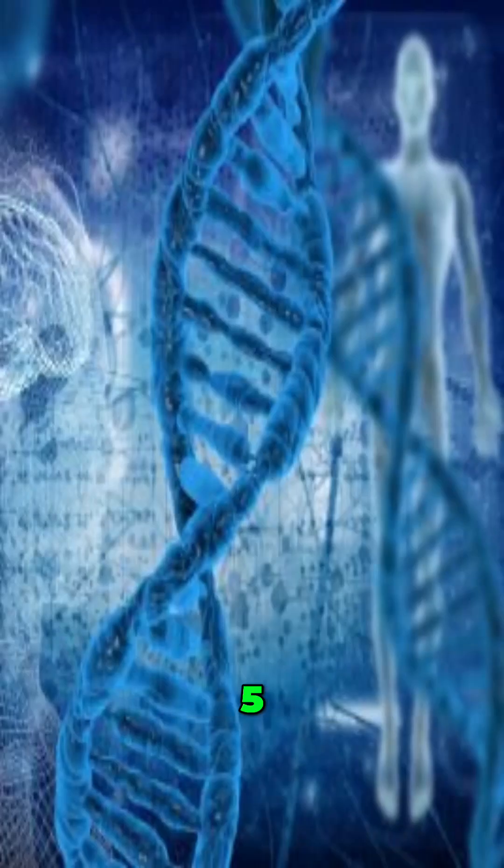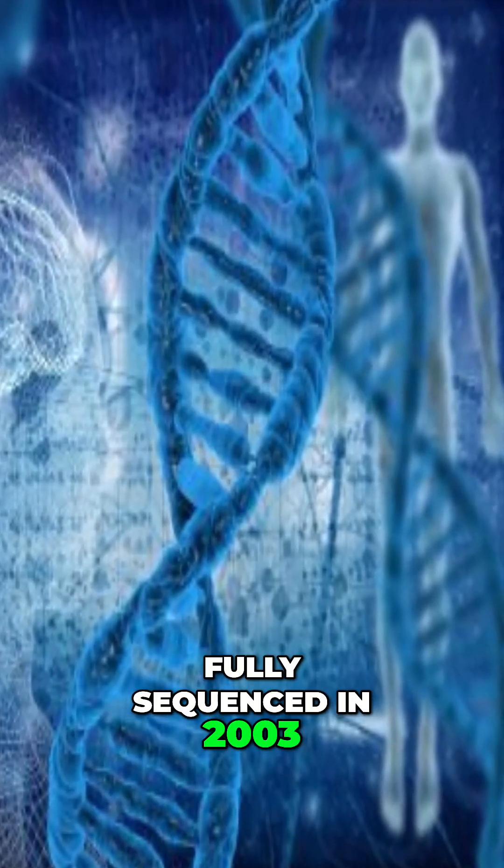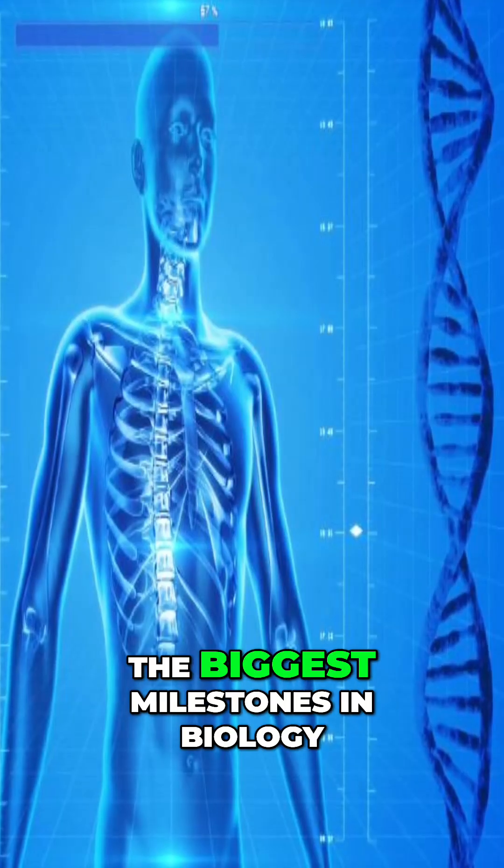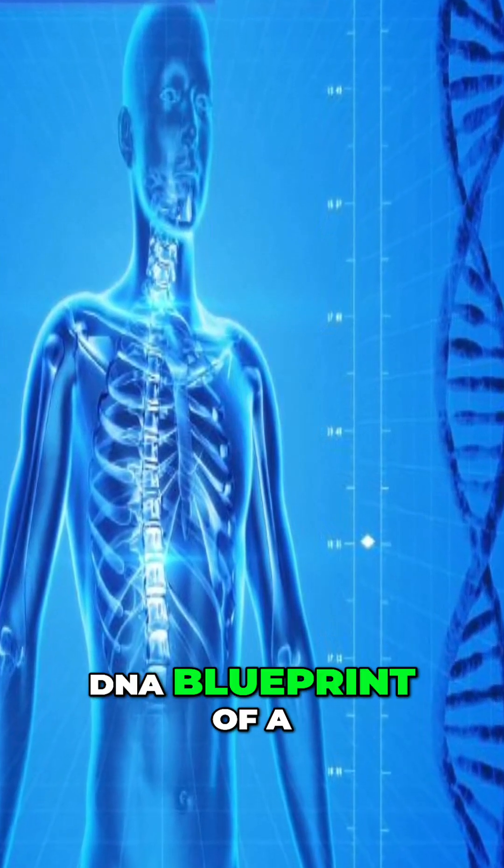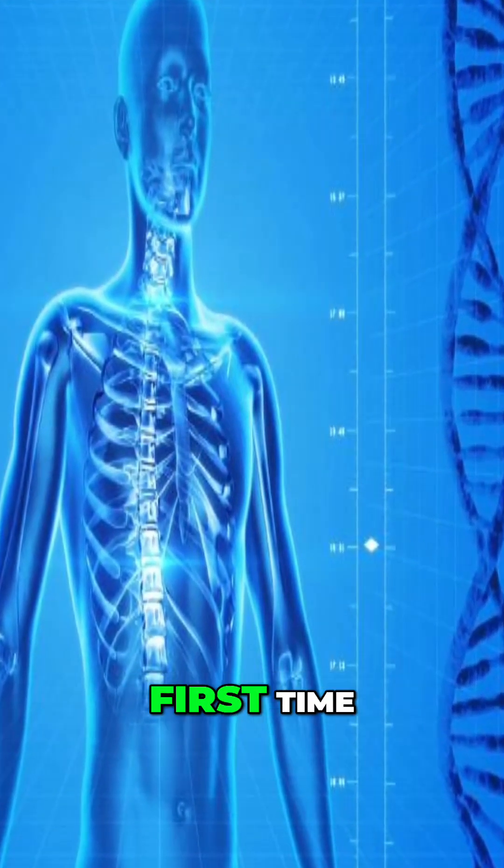5. The human genome was fully sequenced in 2003. It was one of the biggest milestones in biology, giving us the entire DNA blueprint of a human being for the first time.